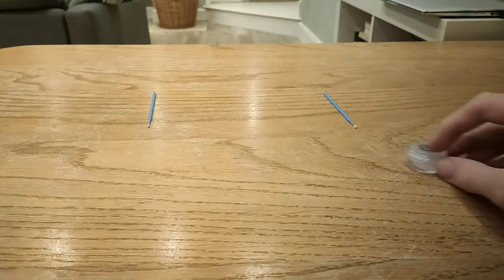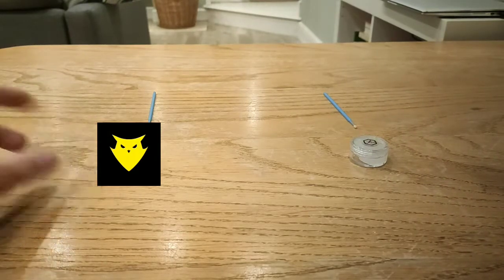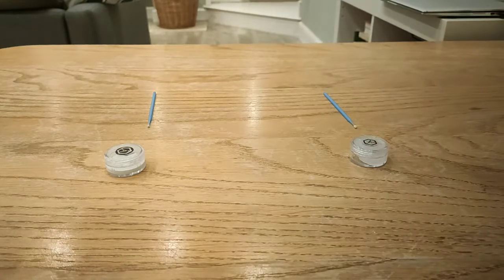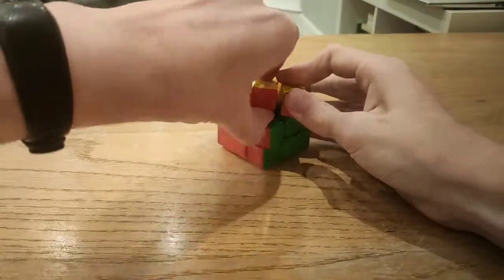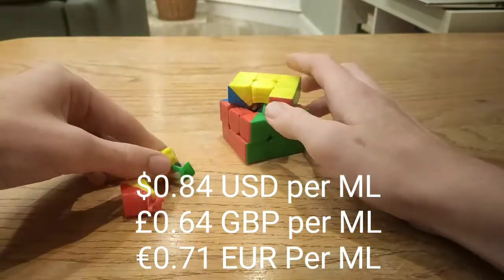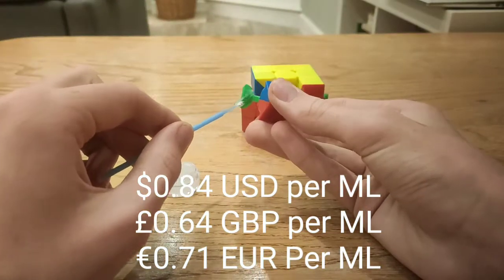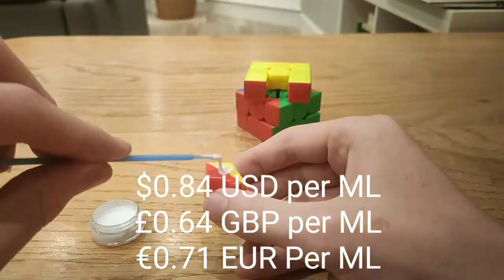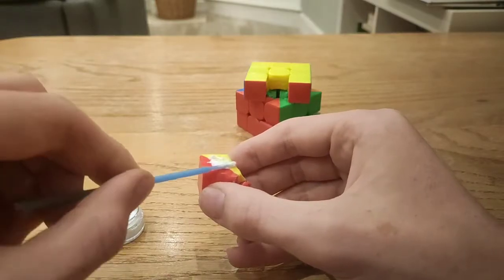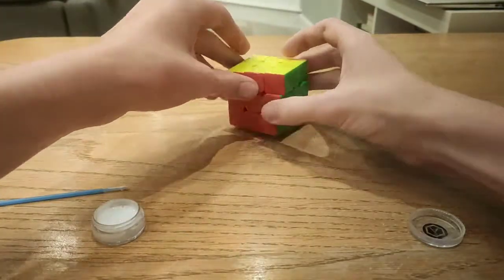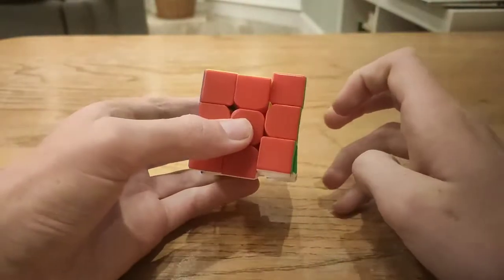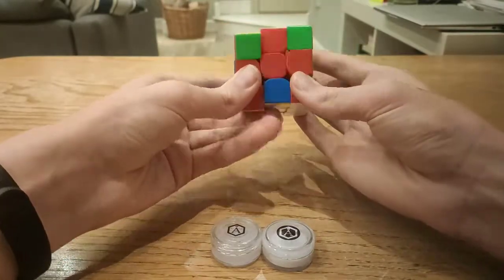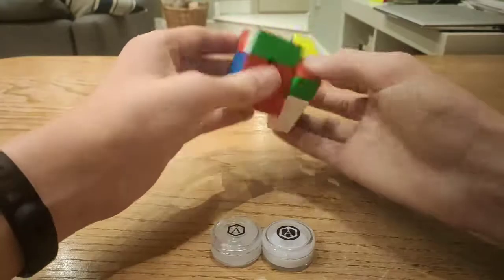So next up we have angstrom gravitas and angstrom dignitas. So I'm doing these two together because you put gravitas on the tracks of the piece and you put dignitas in the main piece. These lubes can take a while to break in.